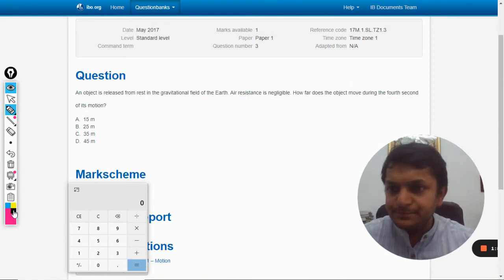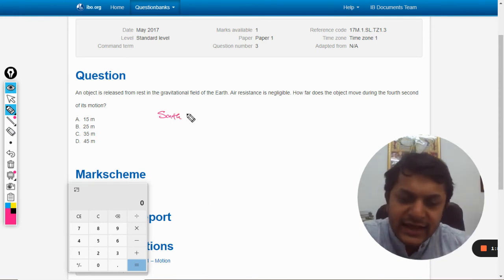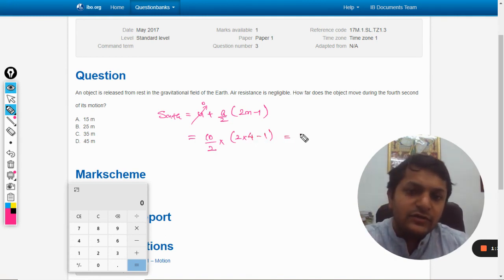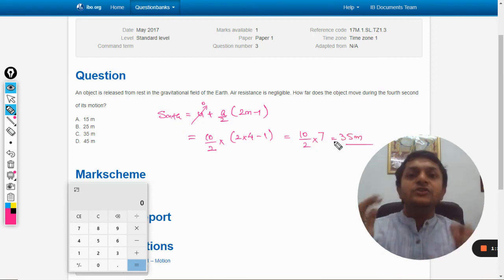Let me show you. Sₙₜₕ = u + a/2 × (2n - 1). U is 0, a is 10 divided by 2, into which second? It is the fourth second that we want. So directly we are getting 10/2 multiplied by 7, which equals 35 meters.